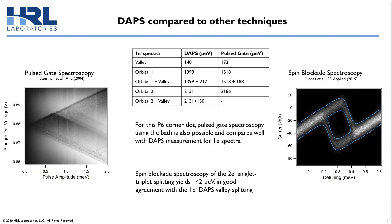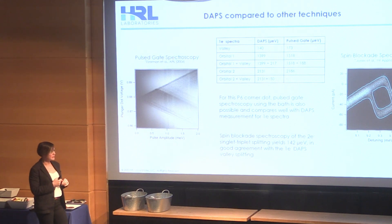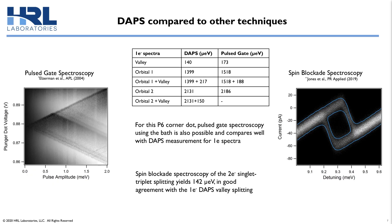This plot on the left is a pulse-gate spectroscopy measurement on that same P6 dot. The energies we extract from this are summarized in a table, and they compare well to those energies we measured with DAPS. In addition, we also performed spin blockade spectroscopy on the P6-P5 dot pair. The fit to that data yielded a two-electron singlet-triplet splitting of about 140 μeV. This is also what we measured with the single-electron DAPS for the single-electron valley splitting, and these two numbers agreeing suggest that the two-electron singlet-triplet splitting, in this case, is indeed valley-limited.